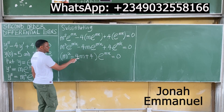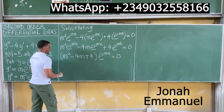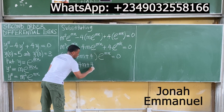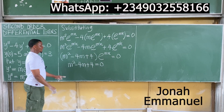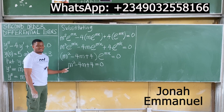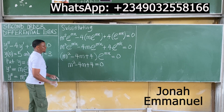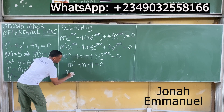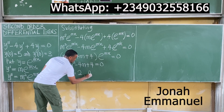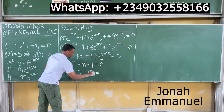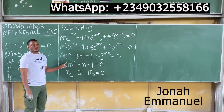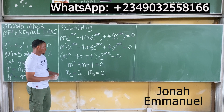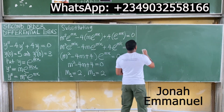What next? Equate the quadratic auxiliary equation to 0. So I have m² minus 4m plus 4 equals 0. Please use a calculator. If you solve this quadratic equation, you observe that the first root is 2 and the second root is also 2 — a repeated root.